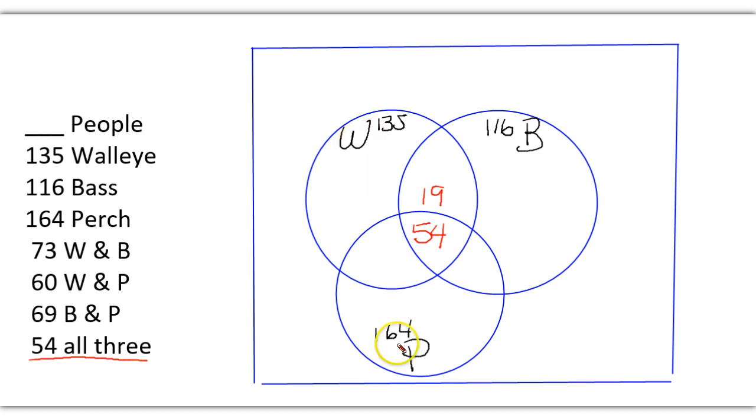Now we're going to go to W and P. W and P, there were 60 that we're going to subtract 54 from. So that gives us 6 that we can now put in red here. This way is your 60, this way is your 73.